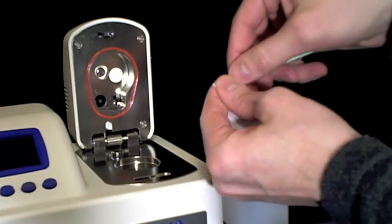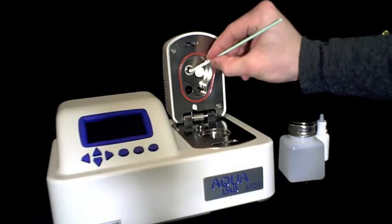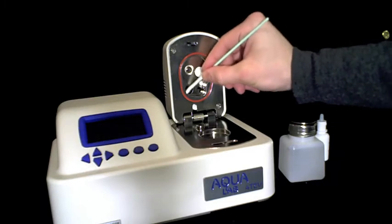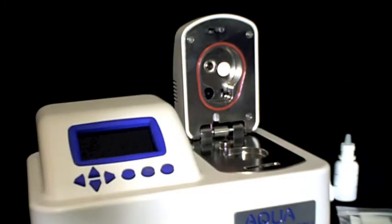Lastly, take another clean kimwipe, apply no solution, and dry the surface of the thermopile, the mirror, and the optical sensor to make sure there is no residual moisture.